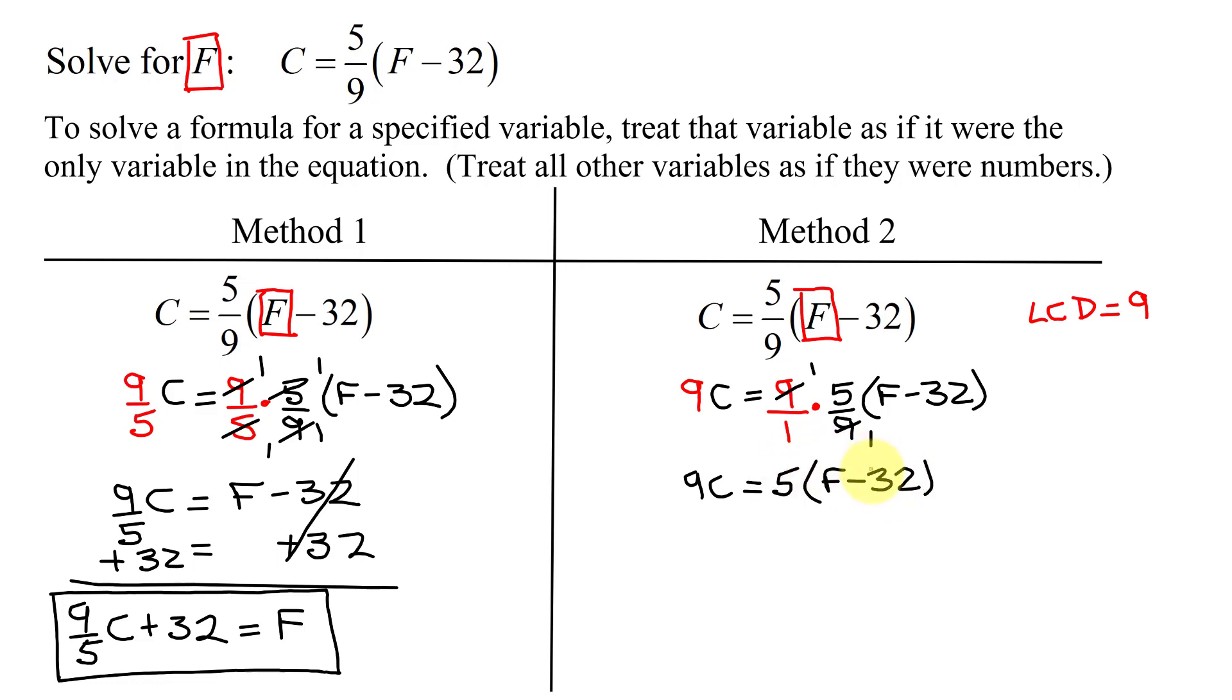Next, I can distribute the parentheses, so I get 9C equals 5 times F, which is 5F. And then 5 times negative 32 is negative 160. To get the 5F by itself, I'm going to add 160 to both sides of the equation.